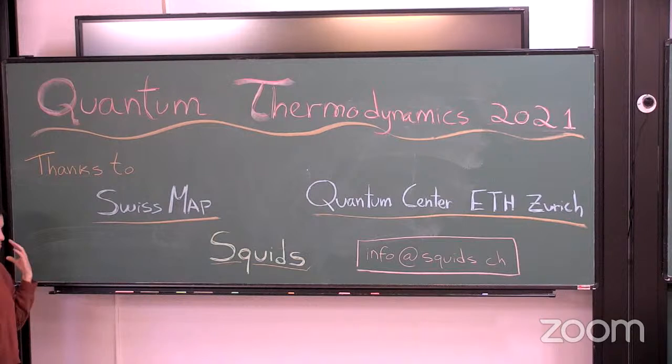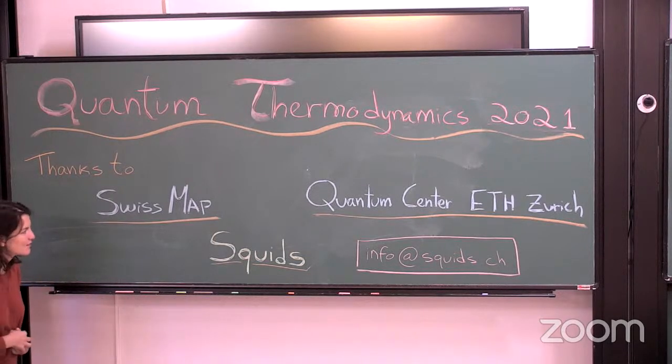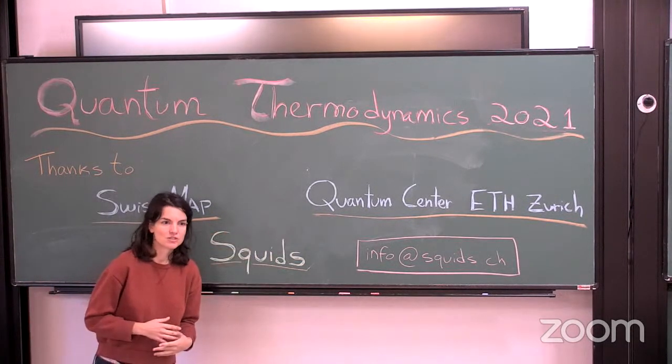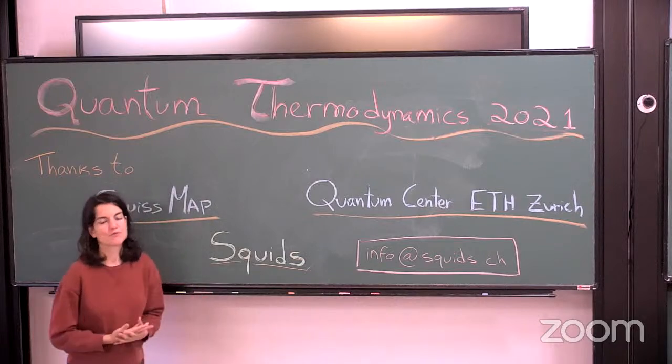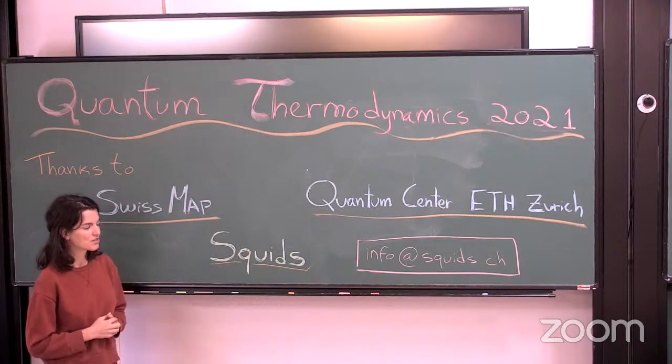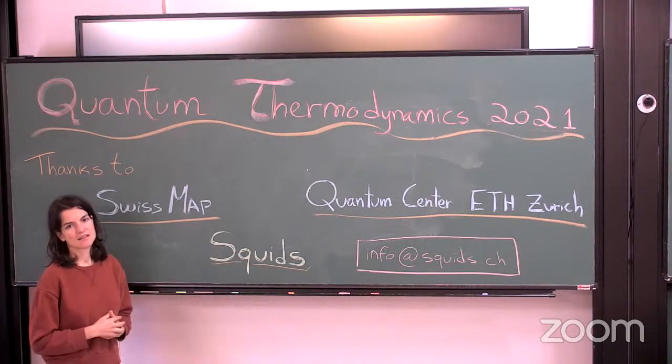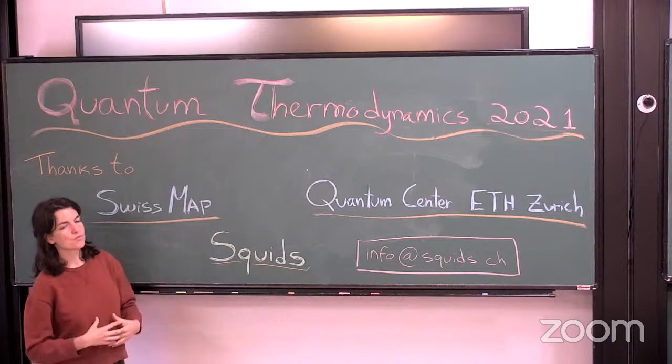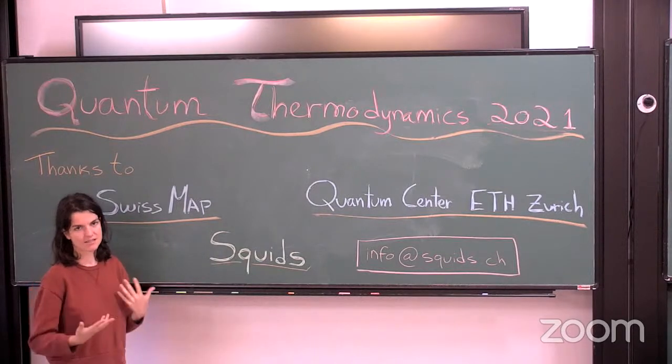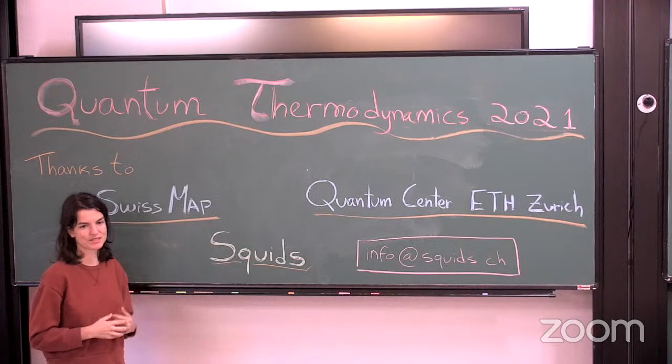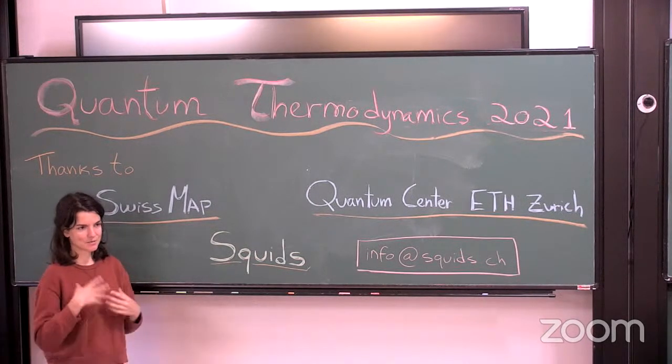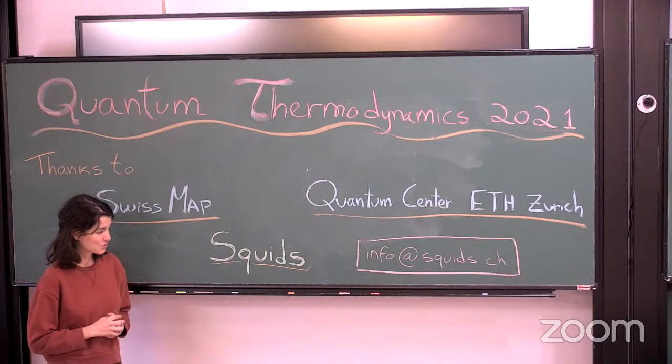The other sponsor is the Quantum Center of ETH Zurich. This is a fairly newly formed center at ETH Zurich, which is one of the best technical universities in Europe. The center encompasses all the groups that do research in quantum science and technology, from theoretical physics to ion traps, superconducting qubits, all the experiments related to quantum science, and condensed matter.